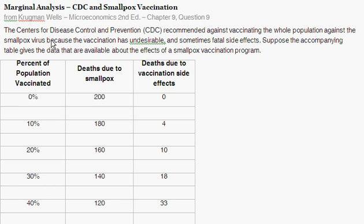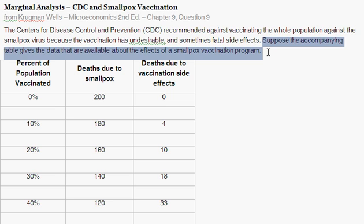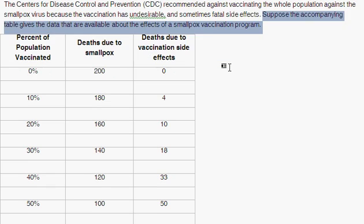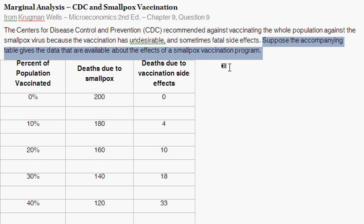The Centers for Disease Control and Prevention, CDC, recommended against vaccinating the whole population against the smallpox virus because the vaccination has undesirable and sometimes fatal side effects. Suppose the accompanying table gives the data available about the effects of a smallpox vaccination program. Note that none of this is true — this is just to make the point about marginal cost and marginal benefit.